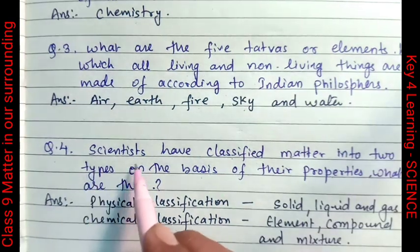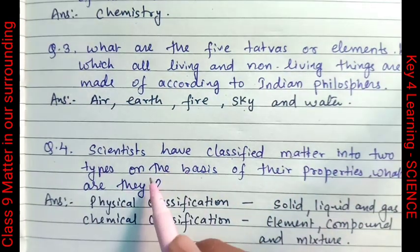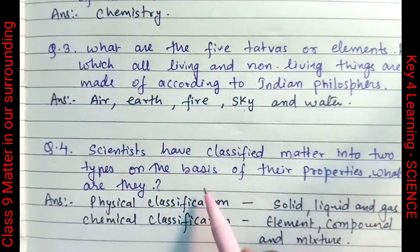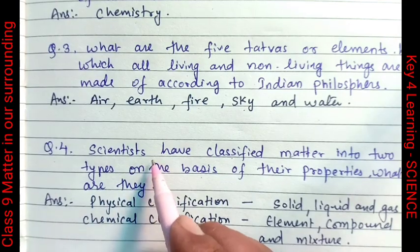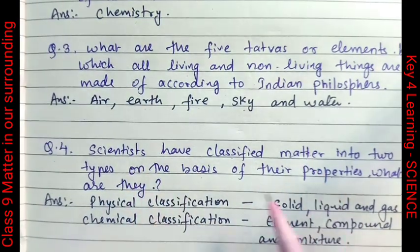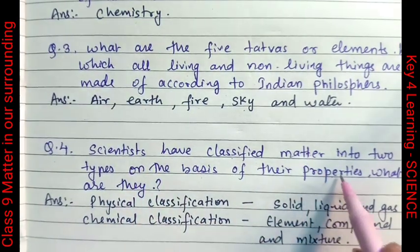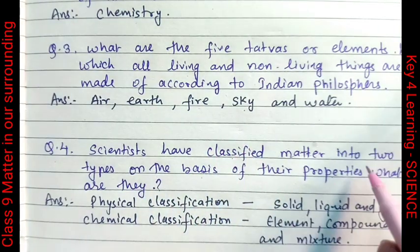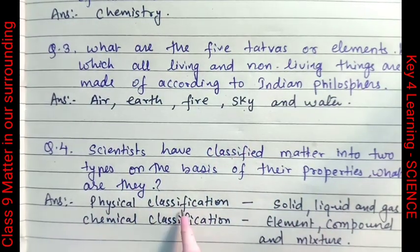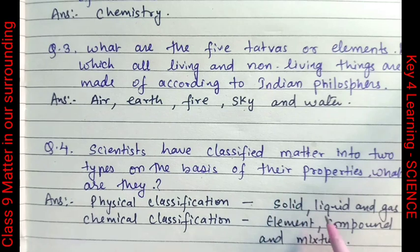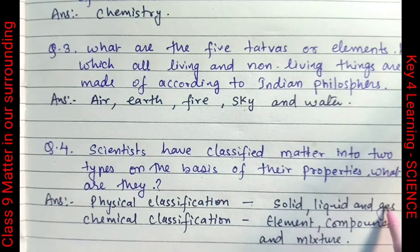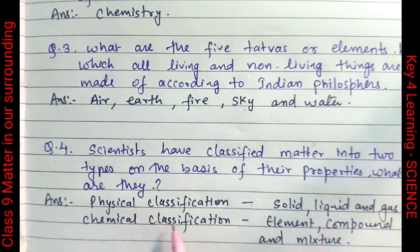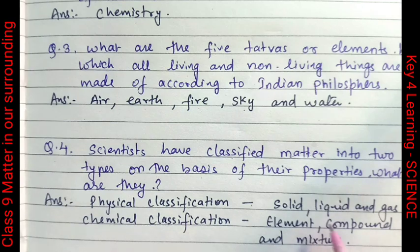Scientists have classified matter into two types on the basis of their properties. The two types are: physical classification, which is based on physical state — solid, liquid, and gas — and chemical classification, which includes element, compound, and mixture.